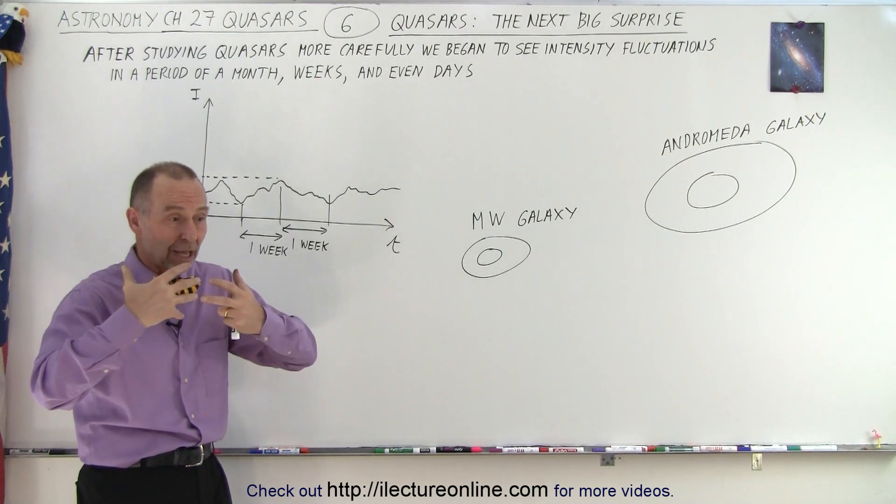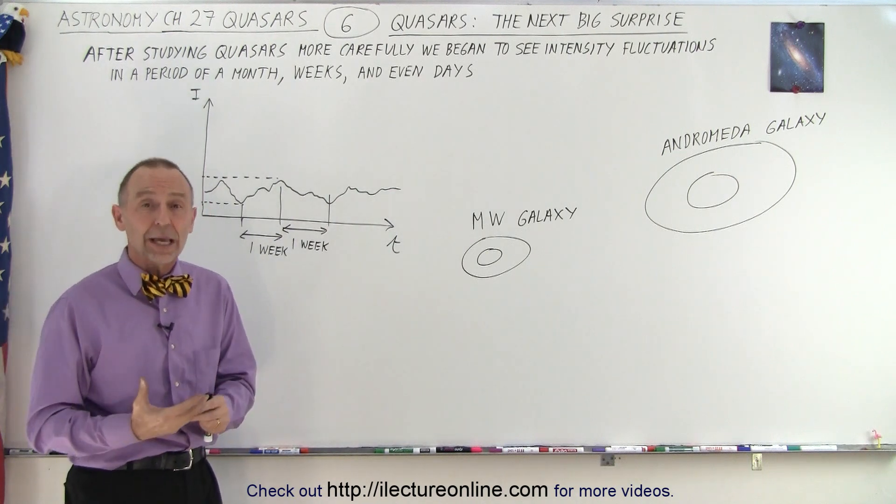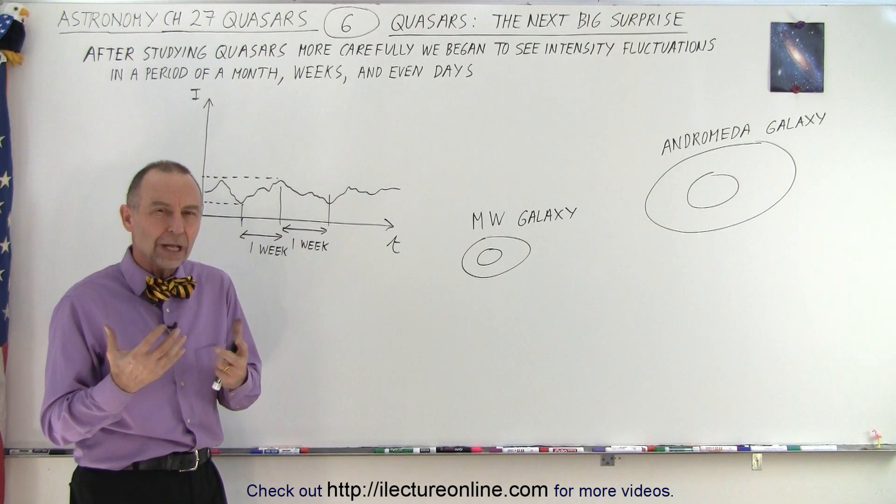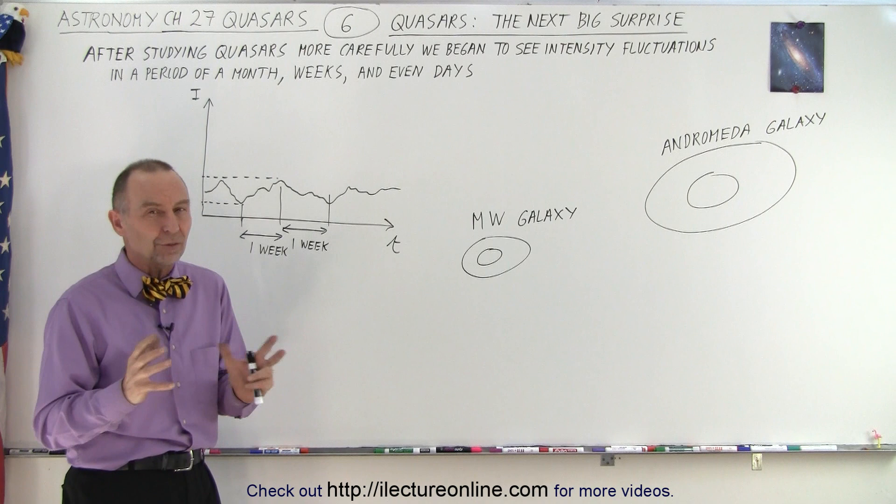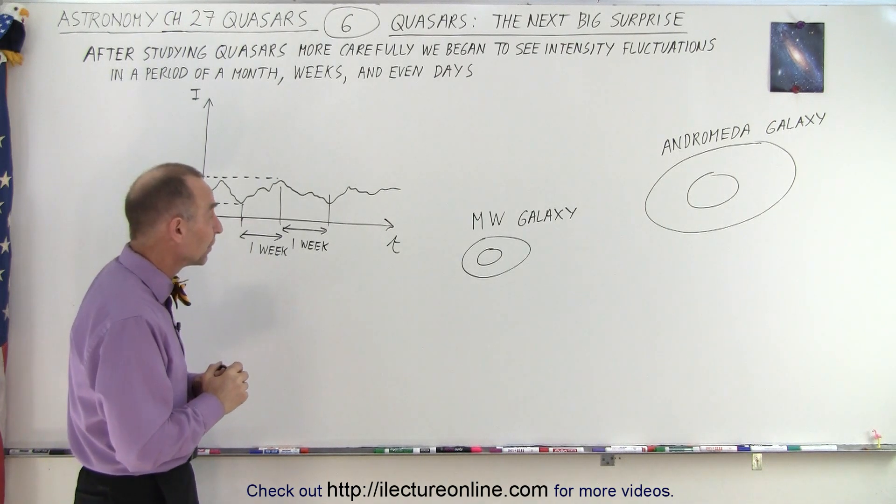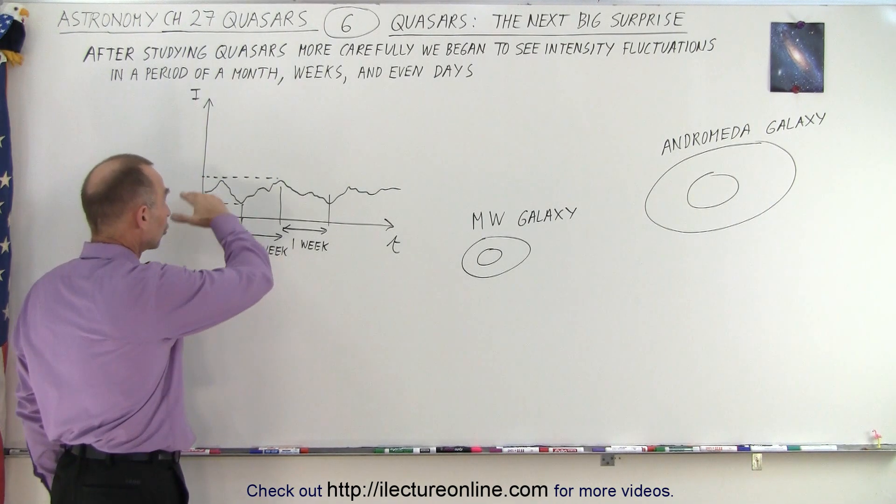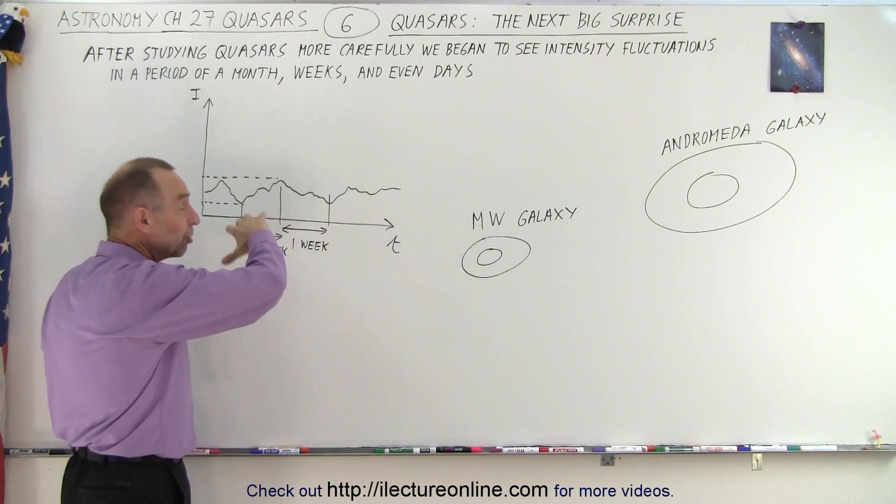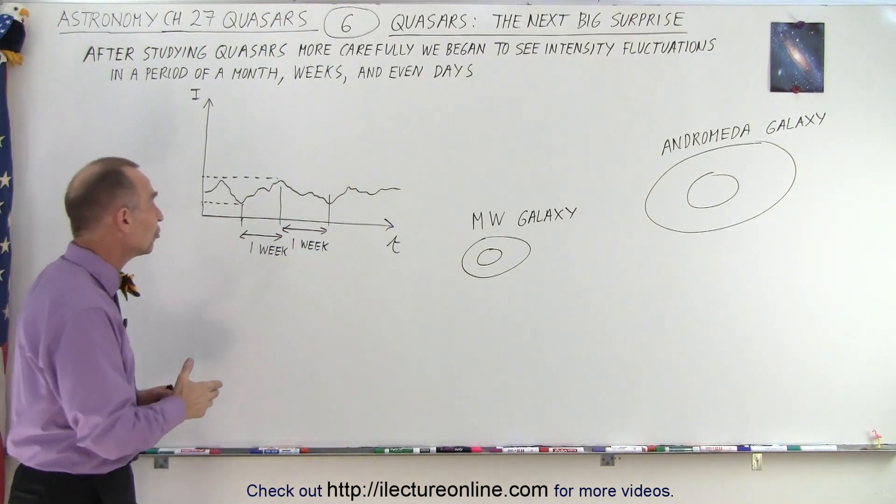Here's the galaxy that's putting out as much light as a thousand Milky Way galaxies. Why does it do that? Where does that come from? What's the mechanism? We had no idea yet at the time. But then let's say that here's the curve, the light curve, or the energy curve, because it's over all the various forms of radiation.